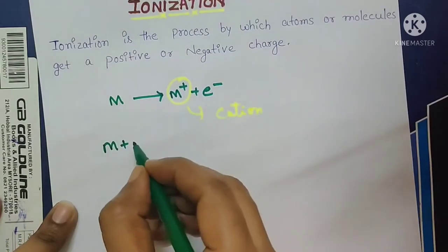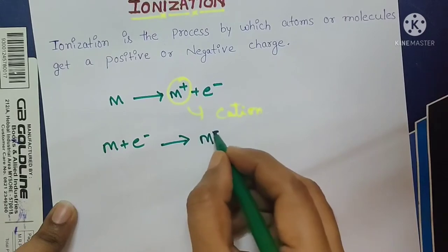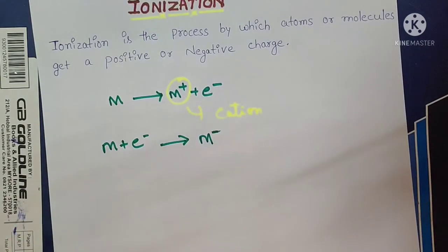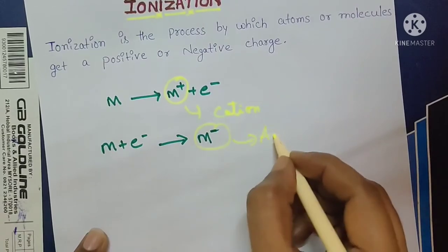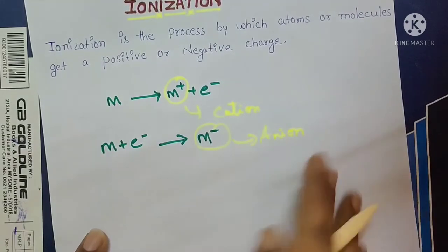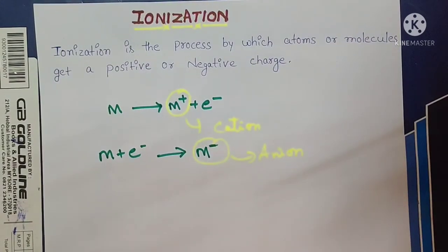The substance, we are adding one electron here. So, M negative. Negative means which ion? Anion. What is happening here in the ionization process? We are getting the ions.